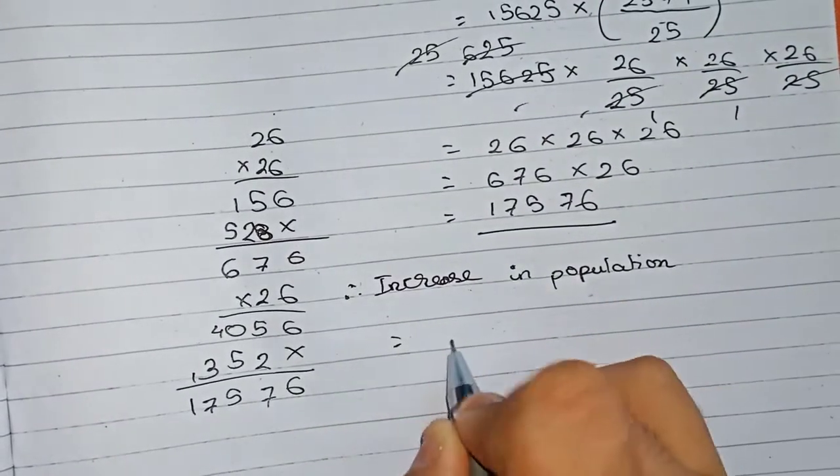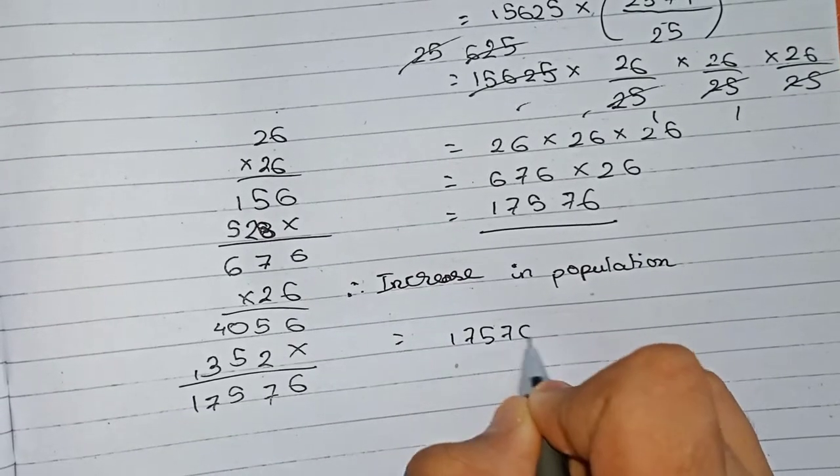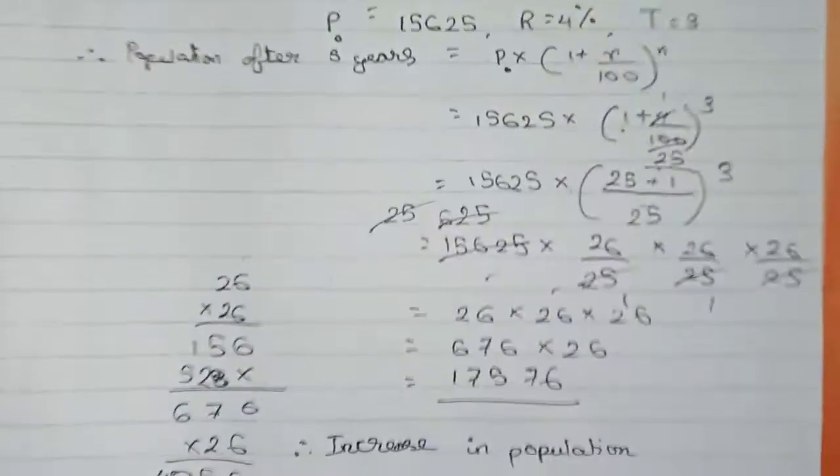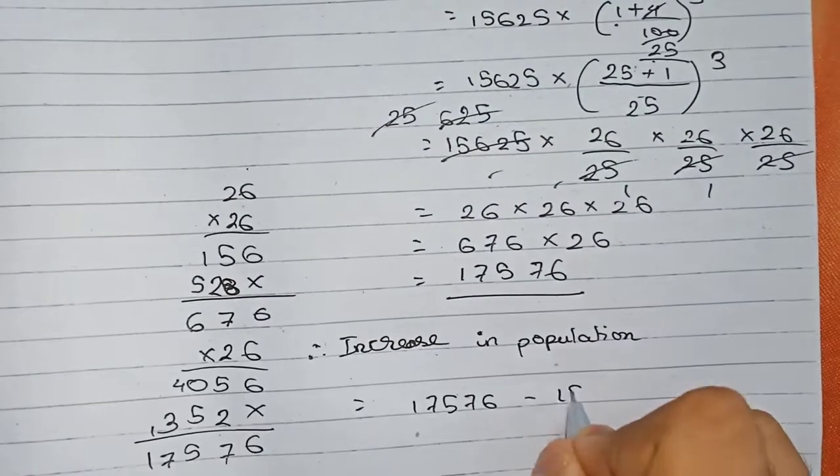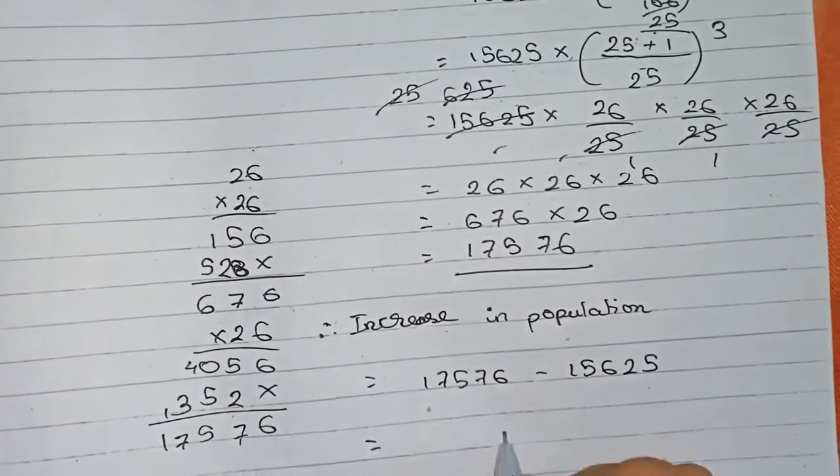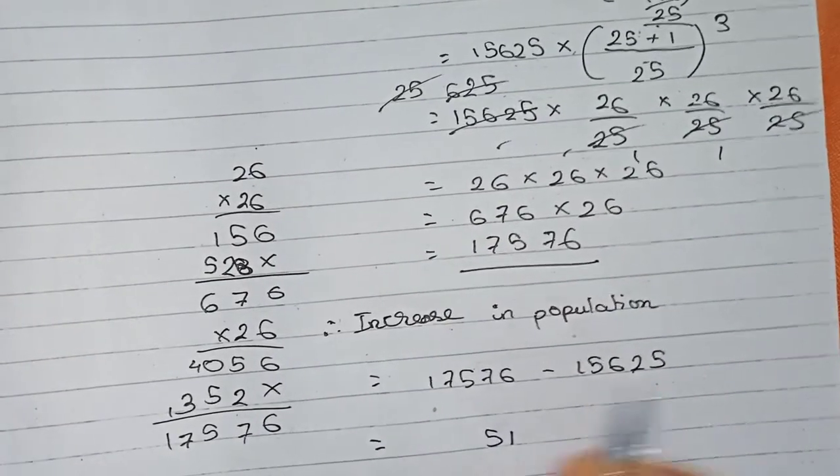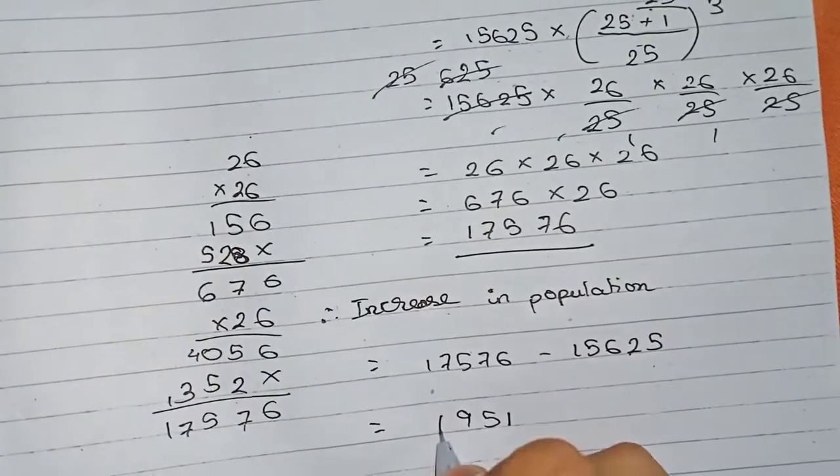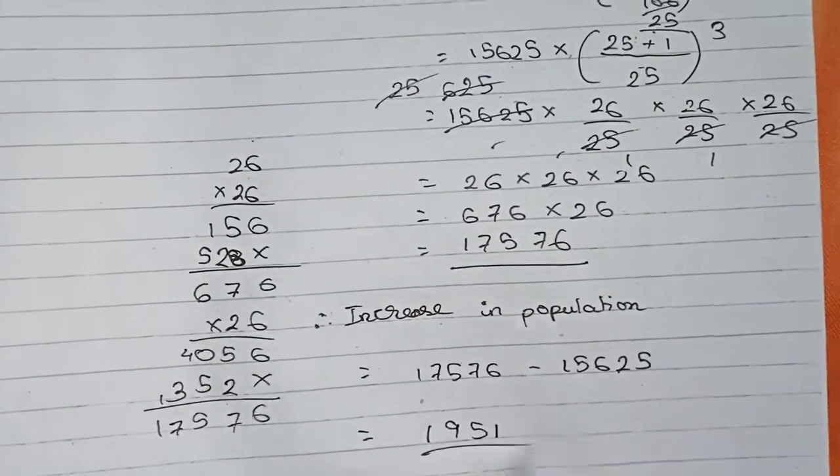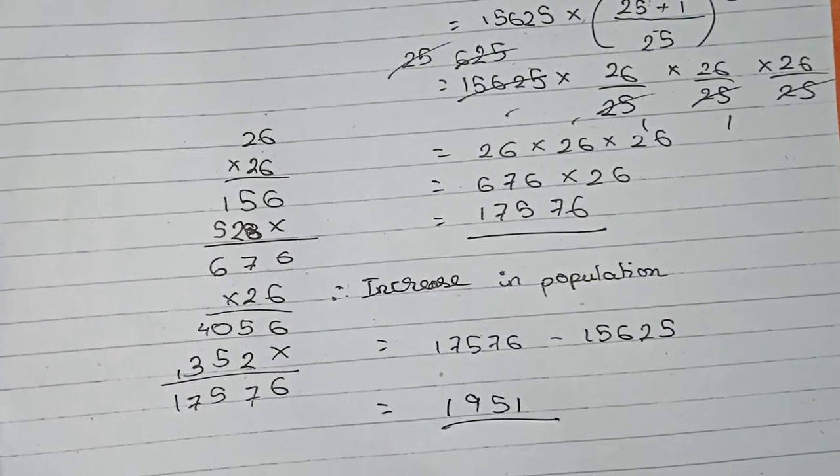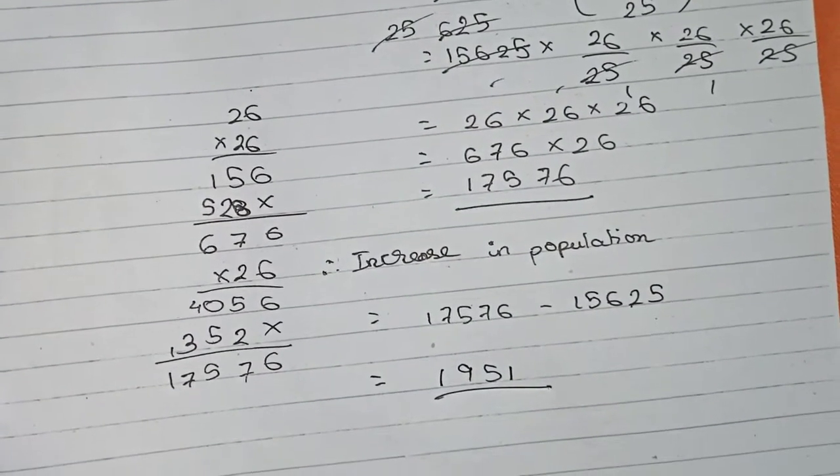...will be equal to 17,576 minus the original principal, that is 15,625. So that will be equal to 1,951. So this will be our final answer for this question. So guys, thanks for watching this video, and please subscribe my channel for more solutions.